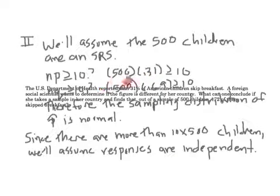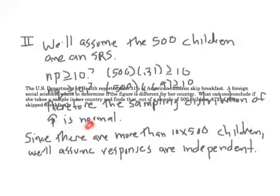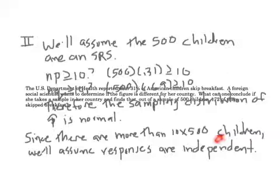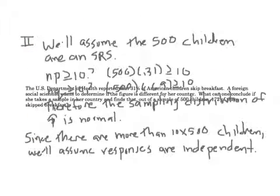It turns out both NP and NQ are bigger than 10, pretty obviously. Therefore, the sampling distribution of P-hat is approximately normal. And for the last condition, since there are more than 10 times 500 children in this country — unless it's a really, really small country — we'll assume that every response from the children is independent of each other. It's exactly the same conditions we checked when doing confidence intervals for proportions.